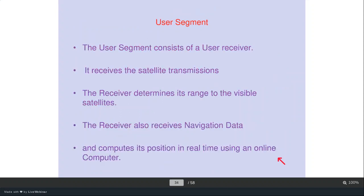The user segment consists of a user receiver — either a chip or handheld device. It receives satellite transmissions — the PRN code and satellite orbital information — determines the range to visible satellites, receives the navigation data, and computes its position in real time using an onboard computer.